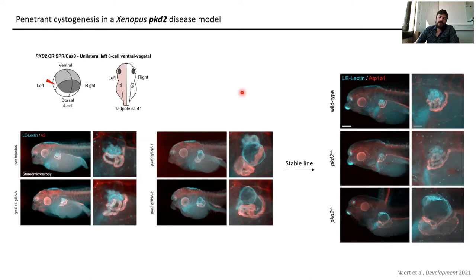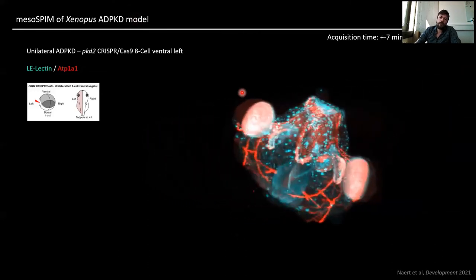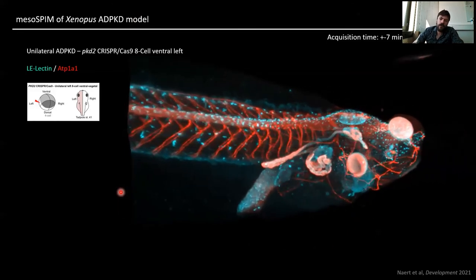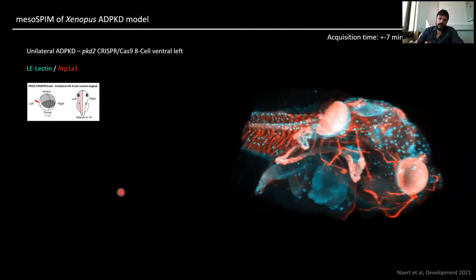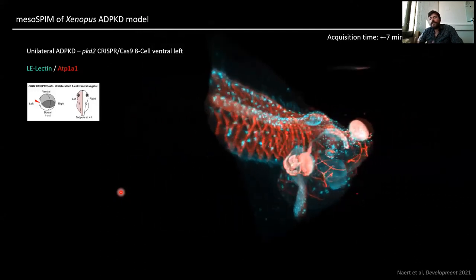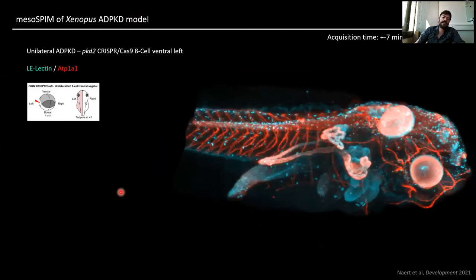Previously we used stereomicroscopy, which meant painstakingly turning and flipping every embryo to image left and right kidneys — very time-consuming, and it gave no three-dimensional context. So we turned these samples to the mesoSPIM. In a unilateral PKD2-injected animal, on the right side one can see a normal developing kidney with normal tubules, while on the left side the cystogenesis is clearly happening. We then had these large data sets and wanted to do feature extraction — asking, for instance, how big is the kidney on one side compared to the other.